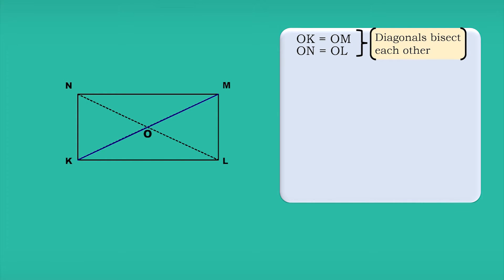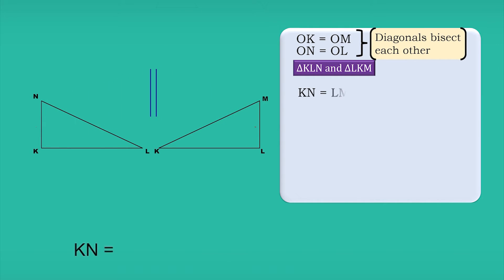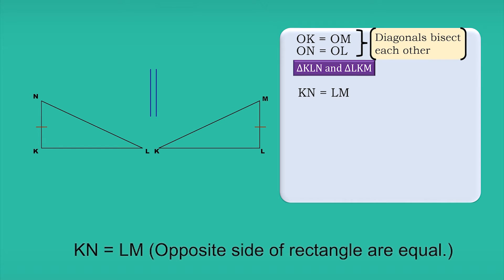Yes, the length of both diagonals is equal. Let's prove this mathematically. Consider triangles KLN and LKM. KN equals LM, since opposite sides of a rectangle are equal.